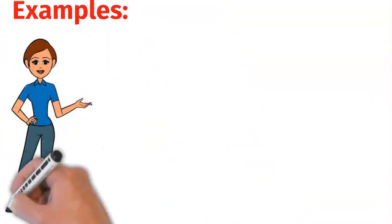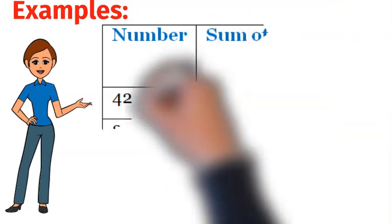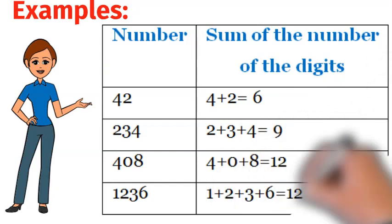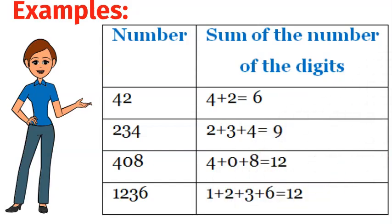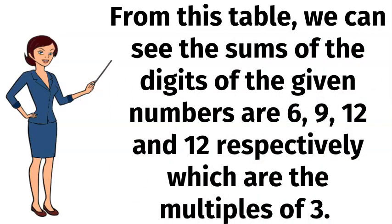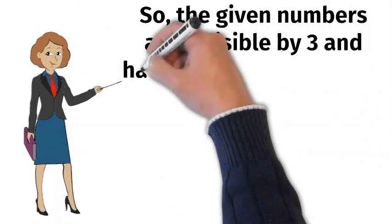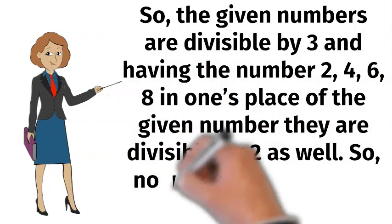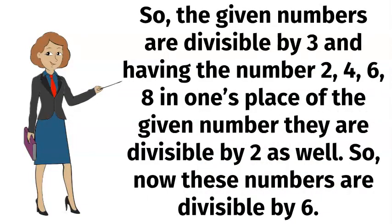Let's take the numbers 42, 234, 408, 1236 and test them whether they are divisible by 2 and 3 by divisibility test. We can see the sums of the digits of the given numbers are 6, 9, 12 and 12 respectively, which are the multiples of 3. The given numbers have 2, 4, 6, 8 in the 1's place, so they are divisible by 2 as well. So now these numbers are divisible by 6.